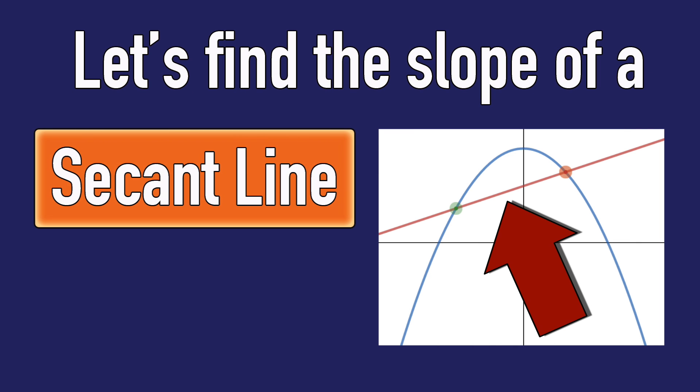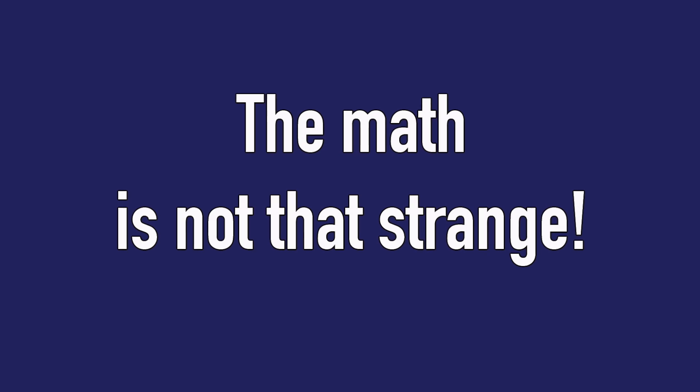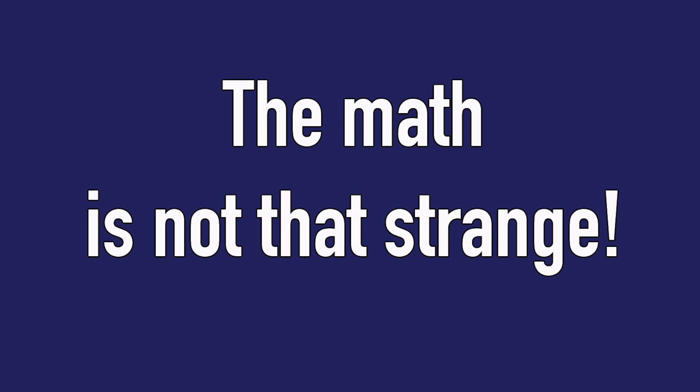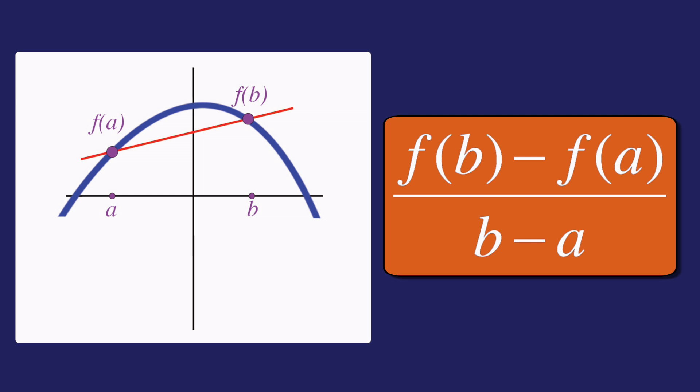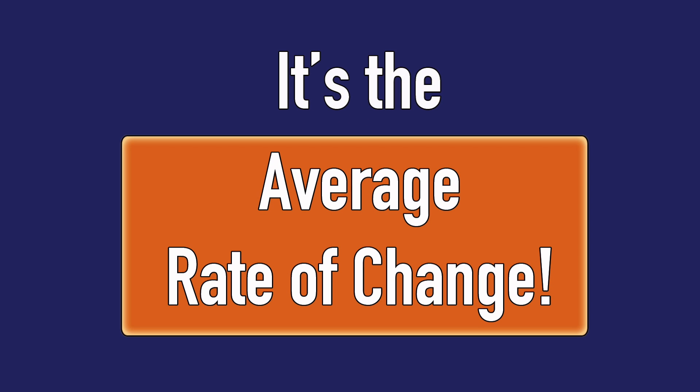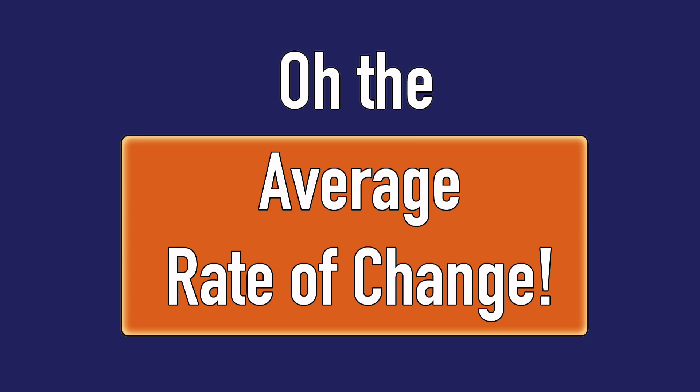Let's find the slope of the secant line. The math is not that strange — it's the average rate of change. M will be f(b) minus f(a) over b minus a. It's the average rate of change.